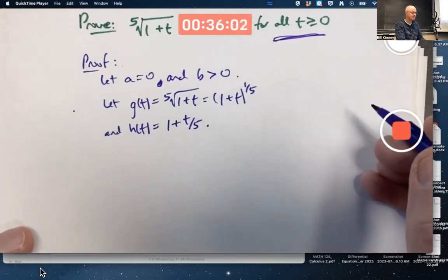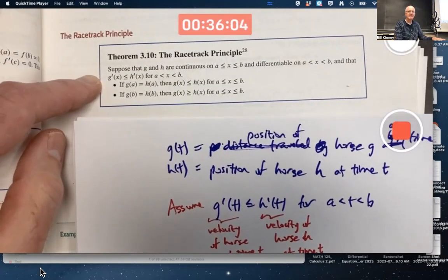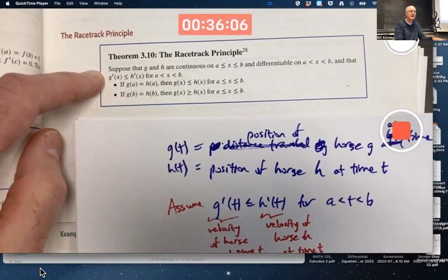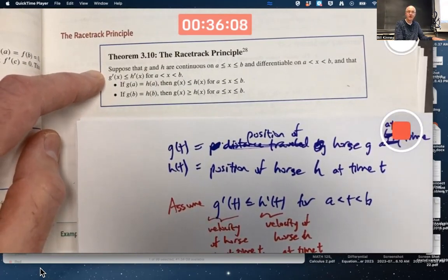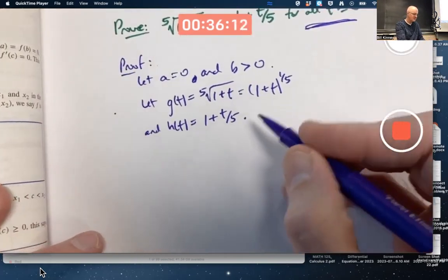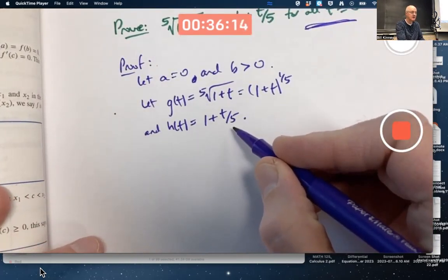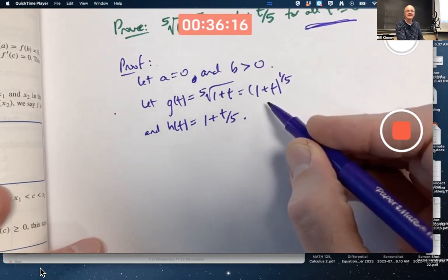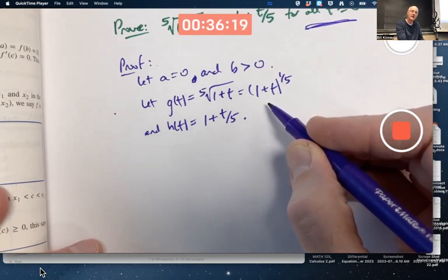We should say some things. We should make sure all the hypotheses of the racetrack principle are satisfied. Are g and h continuous and differentiable? Yeah they are, we know that. Certainly h is - it's a linear function. Is g? Yes, it is continuous and differentiable as long as t is greater than negative one.